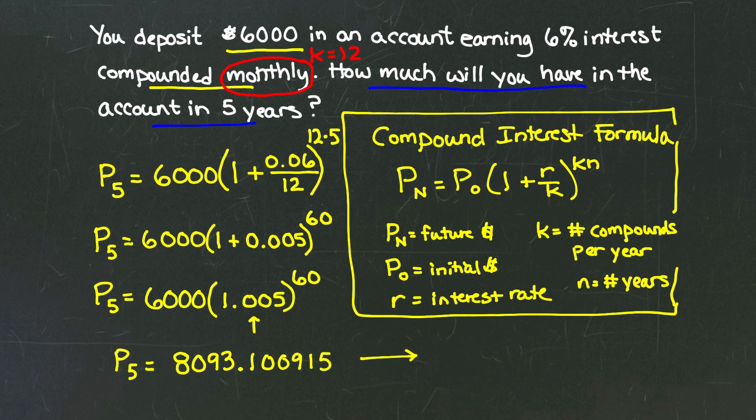But I'm going to round that to the nearest hundredth, or because I know this is money, to the nearest cent. So that tells me that after five years, the amount in the account is $8,093.10. That's it.